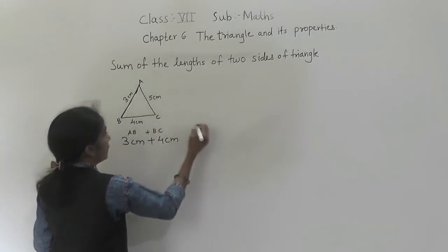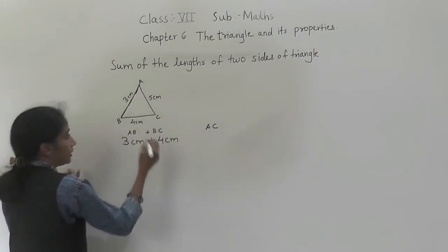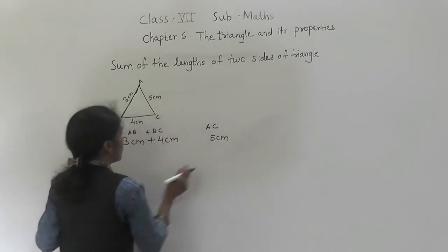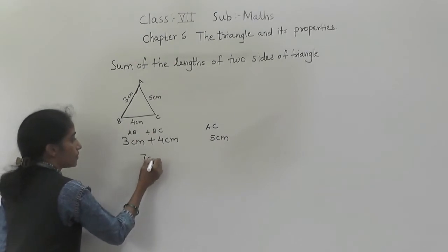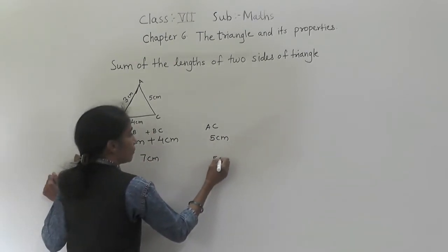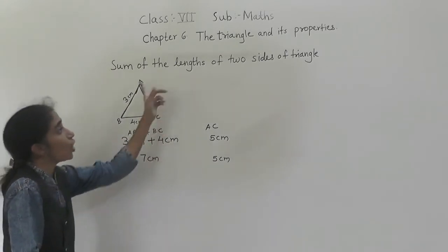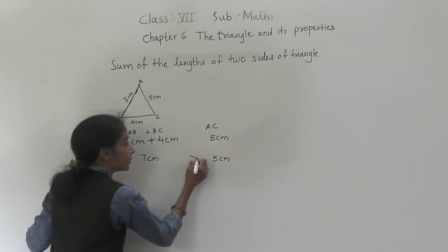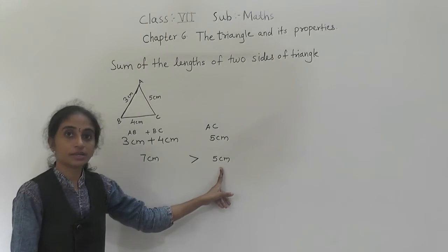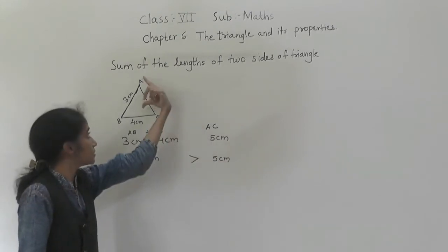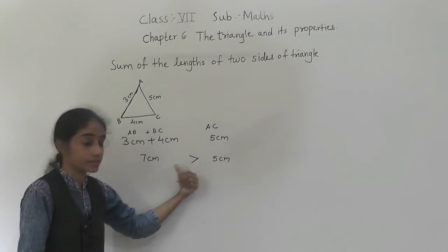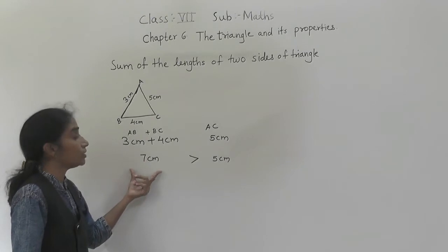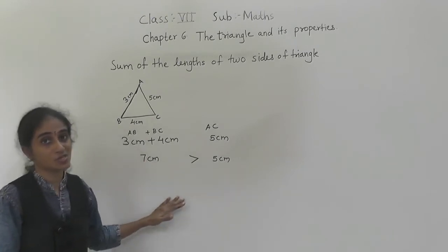Then only it is a possible triangle. Now which is the third side? AC. AC is given as 5 cm. So 3 plus 4 is 7 cm, and the third side is 5 cm. So the sum of the lengths of two sides — 7 cm — is greater than the third side, 5 cm. If the sum of the lengths of two sides is greater than the third side, then only it is a possible triangle.